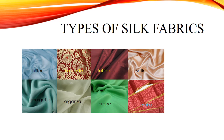Types of Silk Fabrics: Chiffon, Brocade, Taffeta, Satin, Georgette, Organza, Crepe, and Moire.